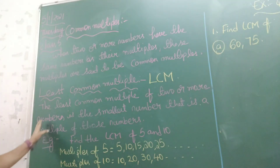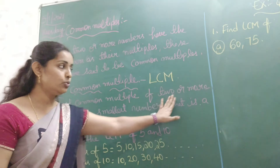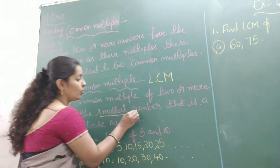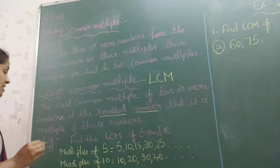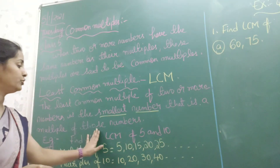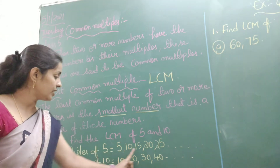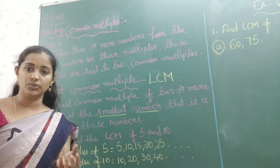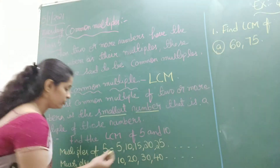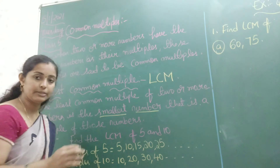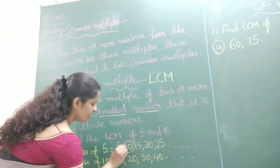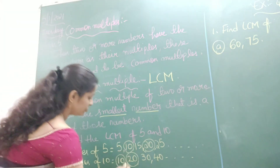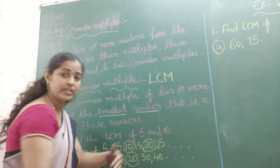Now, from the definition, the least common multiple of two or more numbers is the smallest number. Can you see here? 10 is a common multiple of both 5 and 10. So if you take the common multiples of these numbers, you get 10, 20, and so on. These are the common multiples of these numbers.